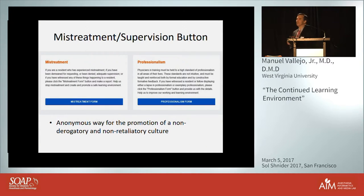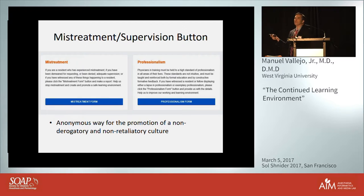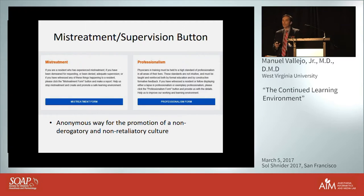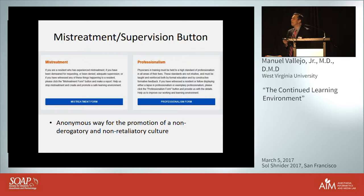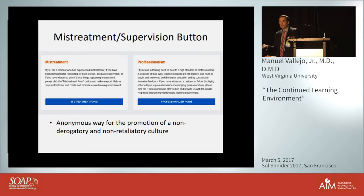The mistreatment supervision button on our website provides an anonymous way to promote a non-derogatory and non-retaliatory culture. If you feel — whether you're a nurse or a resident — that you've been mistreated or a patient has been mistreated, you go to the website and fill it out. You don't have to put your name on it, but you can. We have nurses from the floor, residents, and faculty who use it. There's also a professionalism component — if someone is not treating a patient appropriately, such as not using local anesthesia before a central line, that's inappropriate and can be reported.